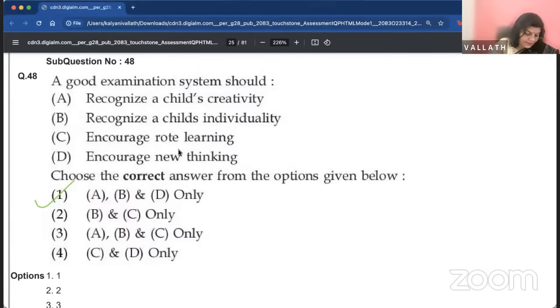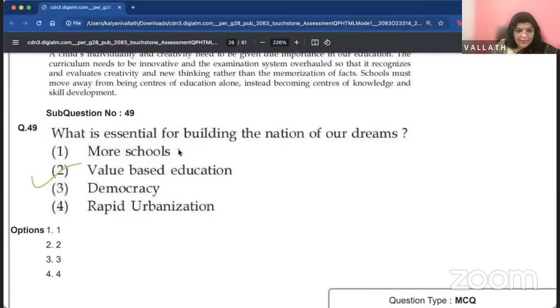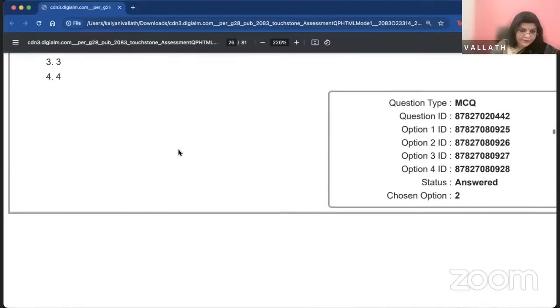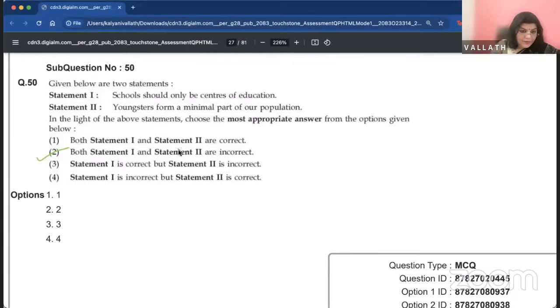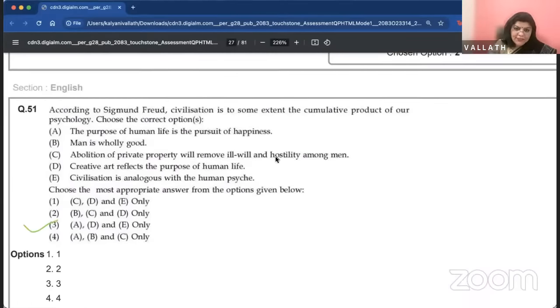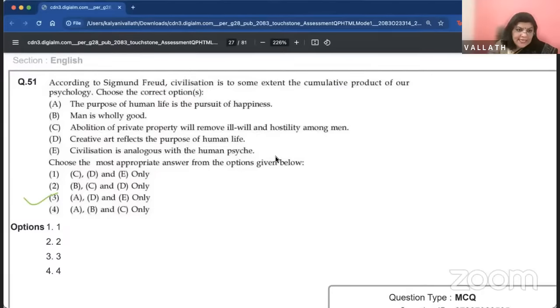There is a comprehension question. Answer given is parents and teachers. A child becomes an enlightened human being as a result of value-based education. That is C and E. There are some tricks and techniques that you should follow for comprehension also. You should not read the passage first itself. There is another technique that you can follow by reading the questions. That saves a lot of time. A good examination system should A, B, D. Encourage rote learning is obviously wrong.